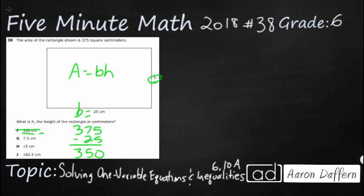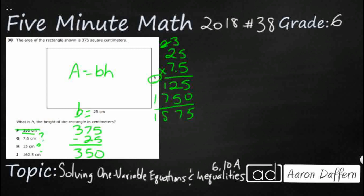I'm thinking it's either going to be G or H. The brute force approach is just going to be to multiply everything by 25 until we find our answer. Let's start with 7.5. When we multiply decimals, we ignore the decimal to begin with and bring it back once we get our answer. So 5 times 5 is 25, 2 times 5 is 10, add the 2 back is 12, 7 times 5 is 35, and 2 times 7 is 14, add the 3 back is 17. That gives us 1875. Now we bring 1 digit behind the decimal, so we get 187.5 — but that is not going to do it.